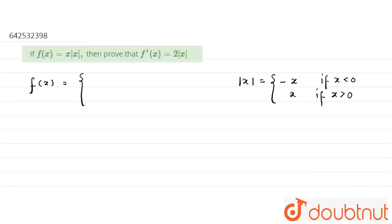Now, if you look at the value of x mod x, what will it be? x times minus x if x is less than 0, so it will become minus x squared.